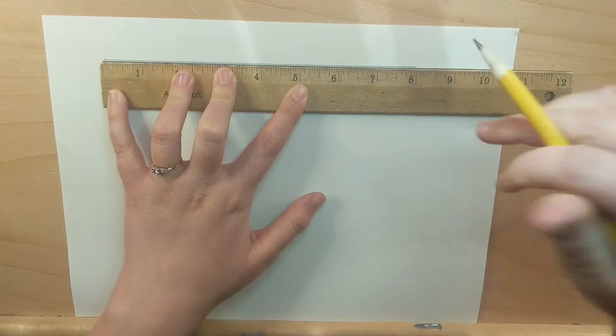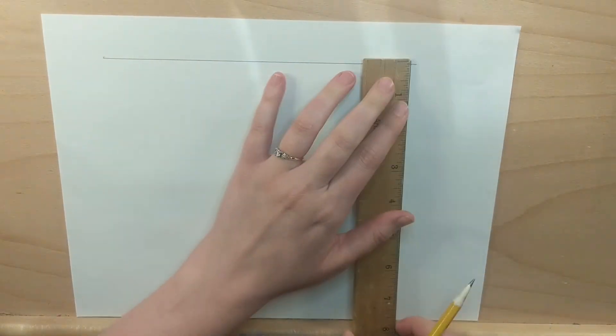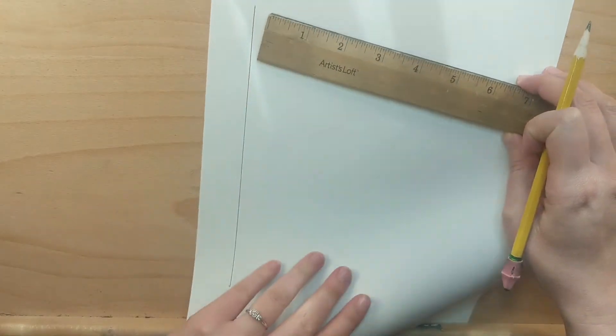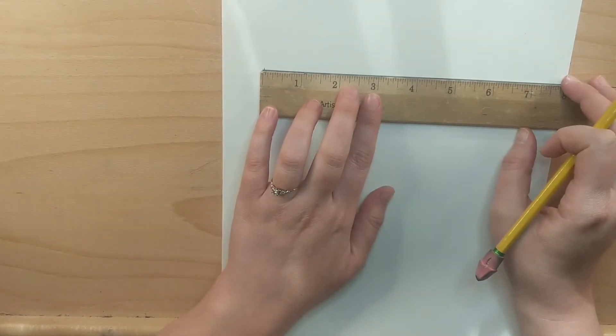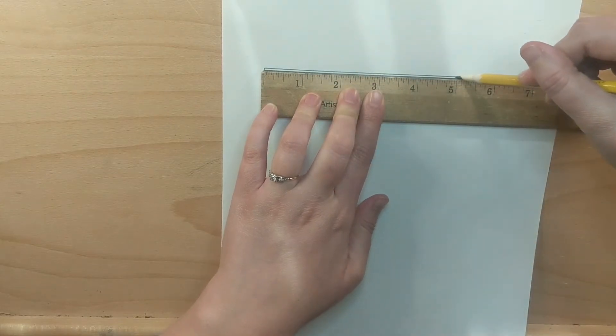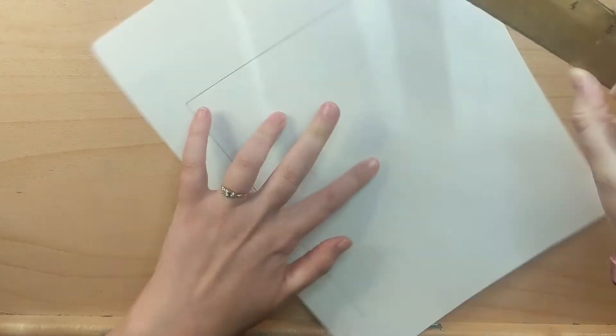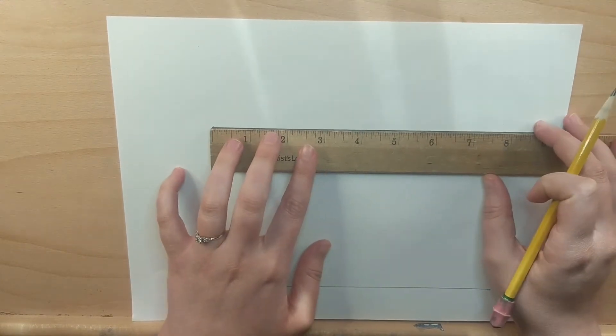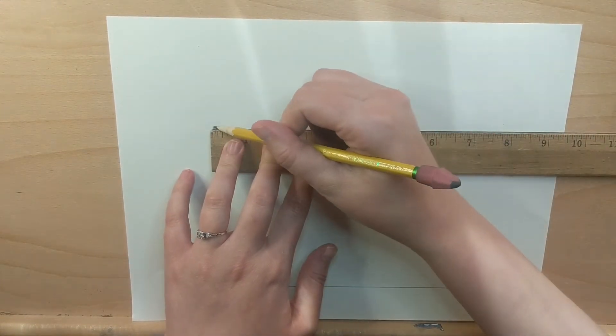Then we're going to be drawing a 5 inch line coming out of that one because we're drawing an 8 inch by 5 inch rectangle. So I drew a 5 inch line, now I'm drawing another 8 inch line, and then finally another 5 inch line. So we have an 8 inch by 5 inch rectangle.